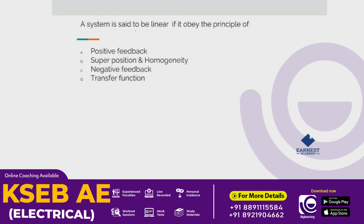A system is said to be linear if it obeys the superposition principle. If circuits are linked in the system or portion of the system, the answer is option B: homogeneity.